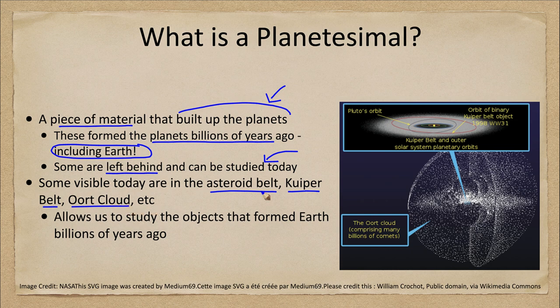Here we show the orbits of some of the very outer objects in the solar system. All of the planets are down in here, very close to the center, and then we see Pluto out here and another Kuiper belt object. It's a belt of objects out beyond Neptune. These are objects that did not form into one of the planets — either a planet didn't form out there, or this is material that was kicked out of the solar system during planetary formation.